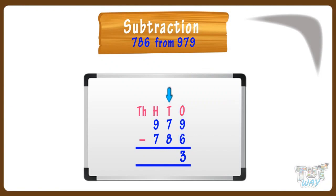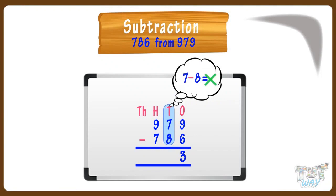Now, tens place. As we can't subtract 8 from 7, borrow 1 from the digit at the next place, that is 9. Cross 9, make it 8, and give 1 to 7 — it is 17 now. Now, subtract 8 from 17. 17 minus 8 equals 9. Write 9 in the answer at tens place.